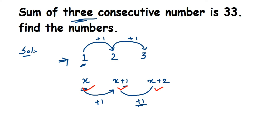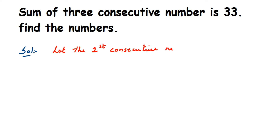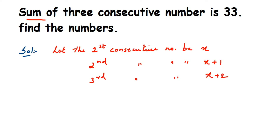If you need the next consecutive number it would be x plus 3 — just add 1 to x plus 2. So we have our three consecutive numbers. Now we form a linear equation. Let the first number be x, the second be x plus 1, and the third be x plus 2. The question says the sum of these three numbers equals 33.